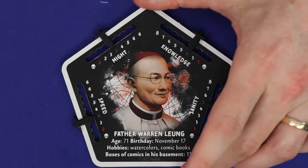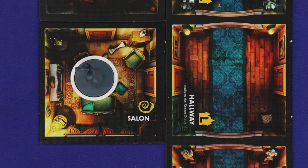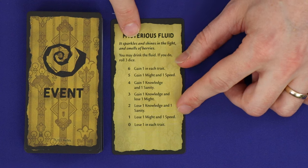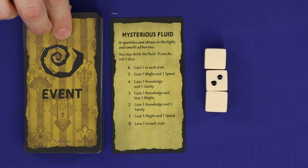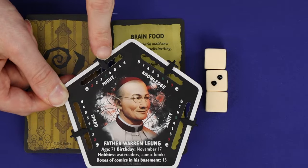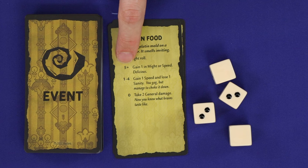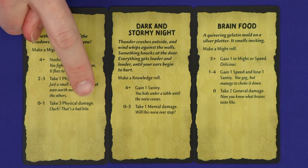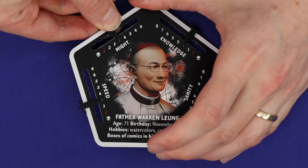Now resolve any immediate effects for the room. If there is a 'when this tile is discovered' text effect, resolve it now — for example, you'd gain a might, meaning you advance the marker on your might track one step. If you discover a room with an icon in the corner, then resolve a card from the corresponding deck. The spiral is an event: flip the top event card and read the italicized text at the top. In most cases you'll now be asked to make a die roll, either with a specific number of dice or to roll against a specific trait. For a might roll, you would roll a number of dice equal to your character's current might. After rolling, count up the sum of the results and determine which of the effects you resolve. These will generally involve gaining or losing traits.